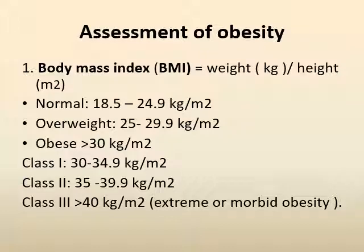Assessment of obesity: the first tool is the body mass index (BMI), equal to weight in kilograms divided by the square of height in meters. The normal BMI is 18.5 to 24.9 kg/m². Overweight represents a BMI ranging from 25 to 29.9 kg/m². Obesity is defined as a BMI of more than 30 kg/m².